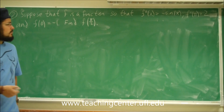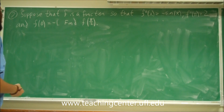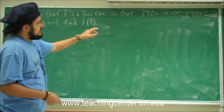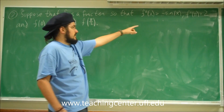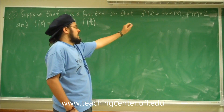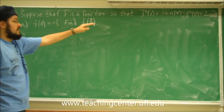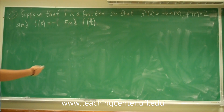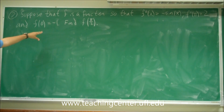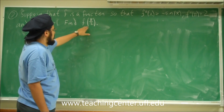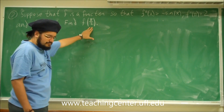Alright, so this is problem 7. Problem 7 reads: suppose that f is a function so that f double prime of x is equal to minus sine of x. They give you some initial conditions: f prime of pi is equal to 2, and f of 0 is equal to negative 1. With that information, they want us to find f of pi over 2.